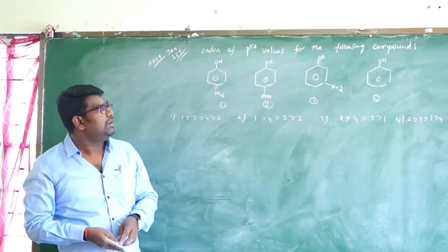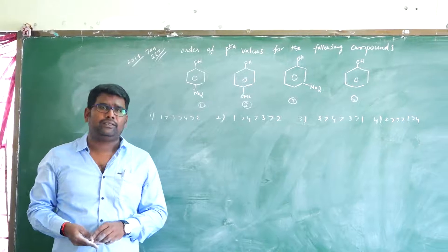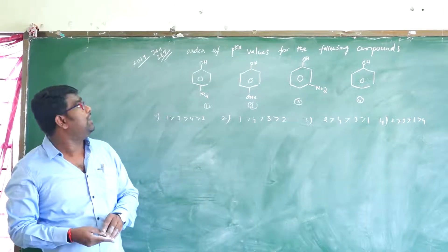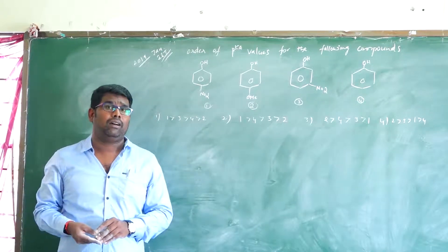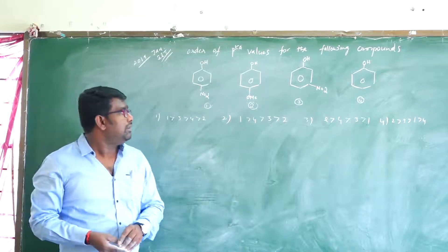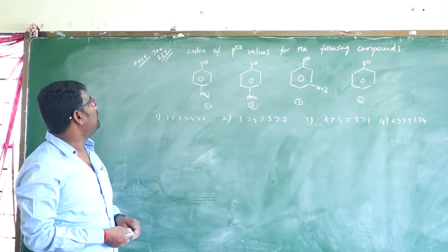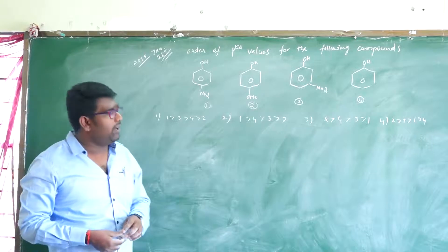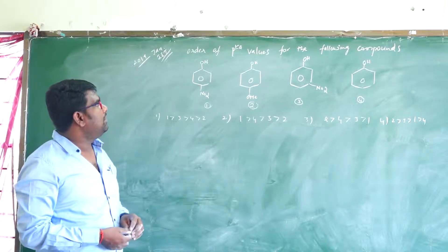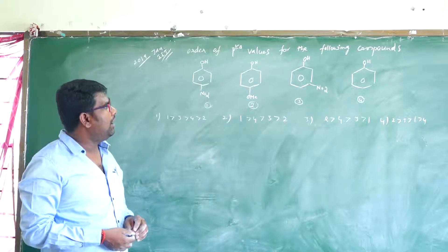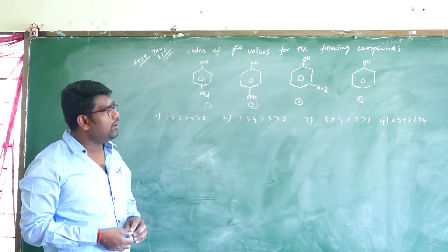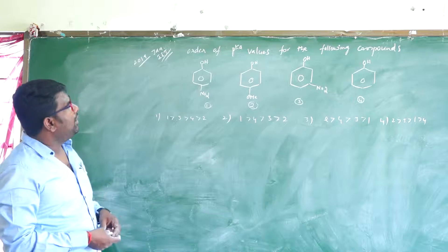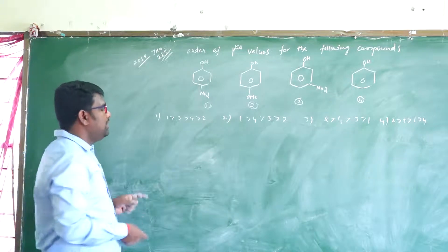In this class I'm going to explain last year IIT JEE questions based upon acidity concepts. This question is from 2019 IIT January phase: order of PKA values for the following compounds — para-nitrophenol, para-methoxyphenol, meta-nitrophenol, and phenol.